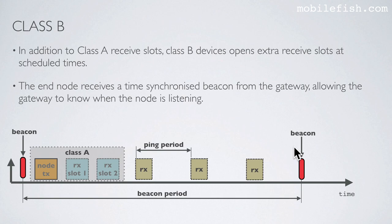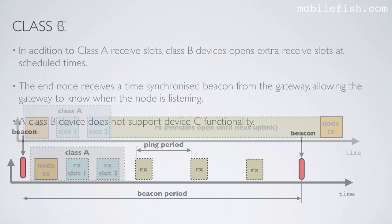In this picture you see two time-synchronized beacons from the gateway which are received by the end node. A Class B device does not support Class C functionality.